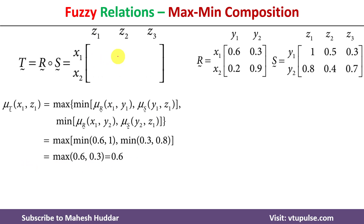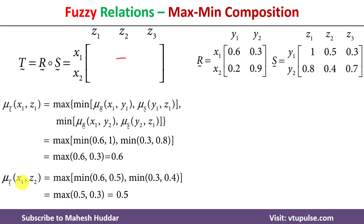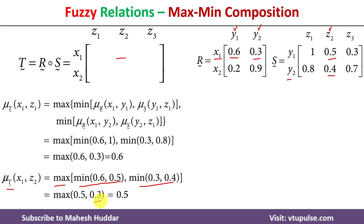For the membership value of x1z2 in fuzzy relation T: we start at x1, go to y1 — value 0.6 — then y1 to z2 — value 0.5. The minimum of 0.6 and 0.5 is 0.5. Then we start at x1, go to y2 — value 0.3 — then y2 to z2 — value 0.4. The minimum of 0.3 and 0.4 is 0.3. The maximum of 0.5 and 0.3 is 0.5. So the membership value of x1z2 is 0.5.